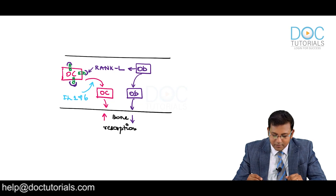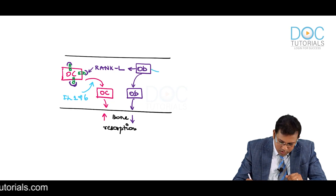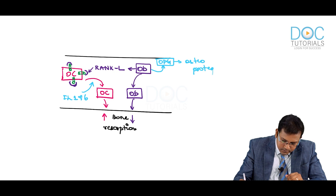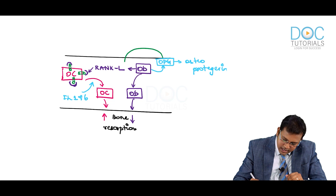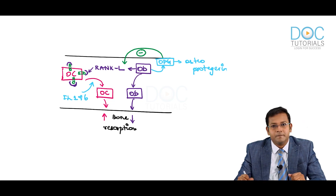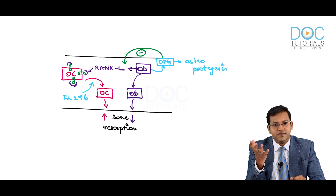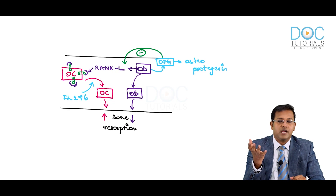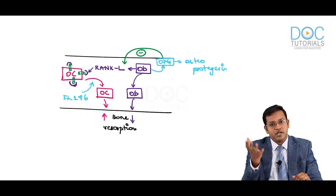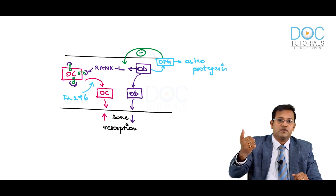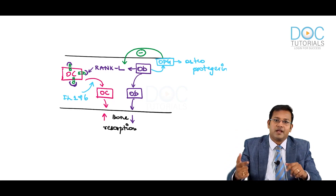There is another important point: osteoblasts also increase the production of OPG molecules — osteoprotegerin molecules. Osteoprotegerin has inhibitory activity on RANKL molecules. So osteoblasts increase RANKL production, causing bone resorption, but osteoblasts also produce osteoprotegerin, which has the opposite activity and inhibits RANKL molecules.